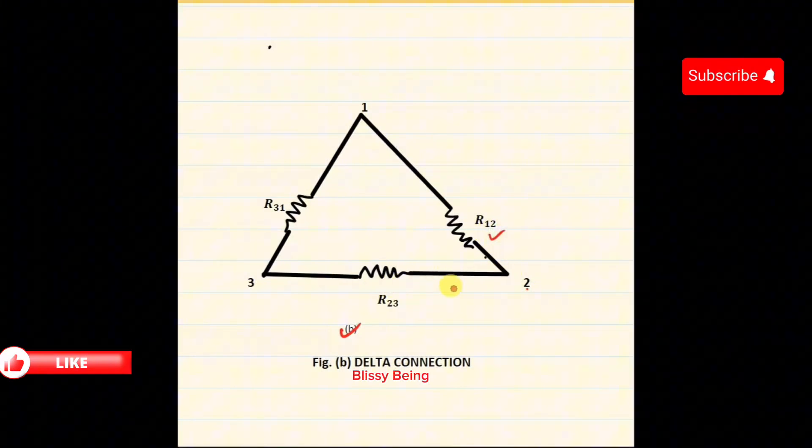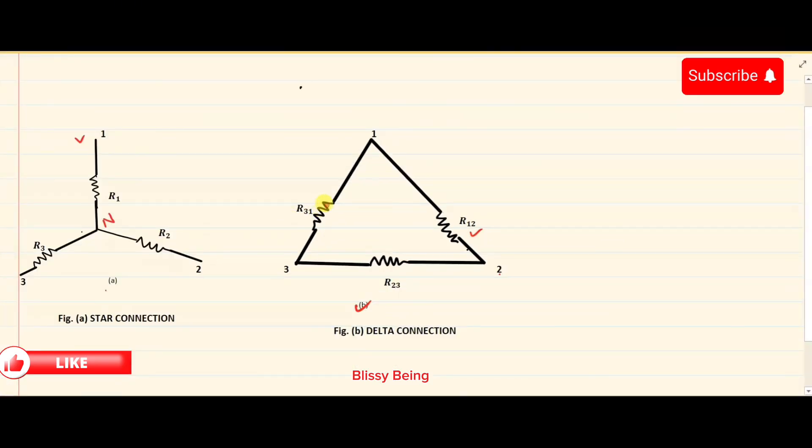Between terminal 2 and 3 is named as R23, and between terminal 1 and 3 is named as R31. You can name it the way you want. This layout is commonly used in various industrial and electrical applications.